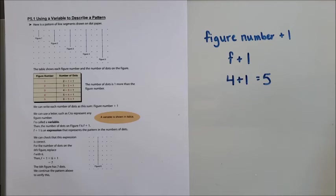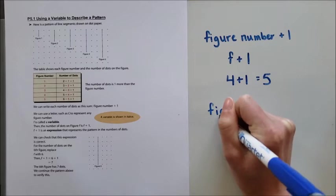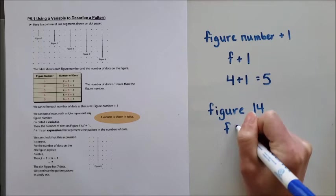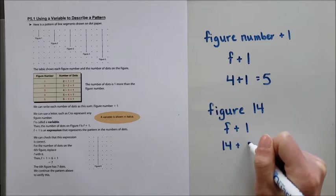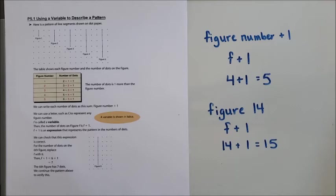Now this is super handy when I'm looking and maybe sometimes I want to know how many dots would be in the 14th figure. So if I want to know in figure 14 how many dots I would have, that F plus one, my figure number is 14, I would have 15 dots and it saves me from going through the table and following the pattern or drawing out every single one of them until I get to whatever number that is.